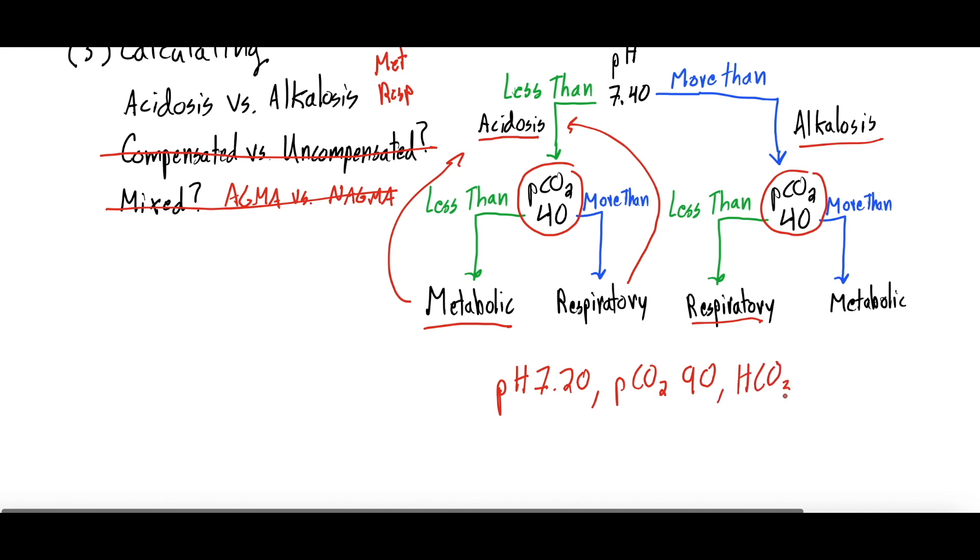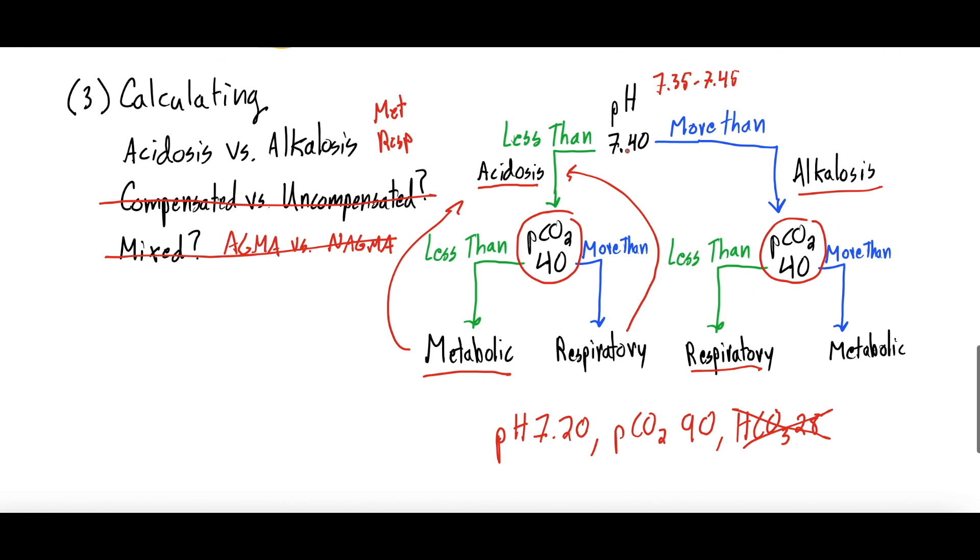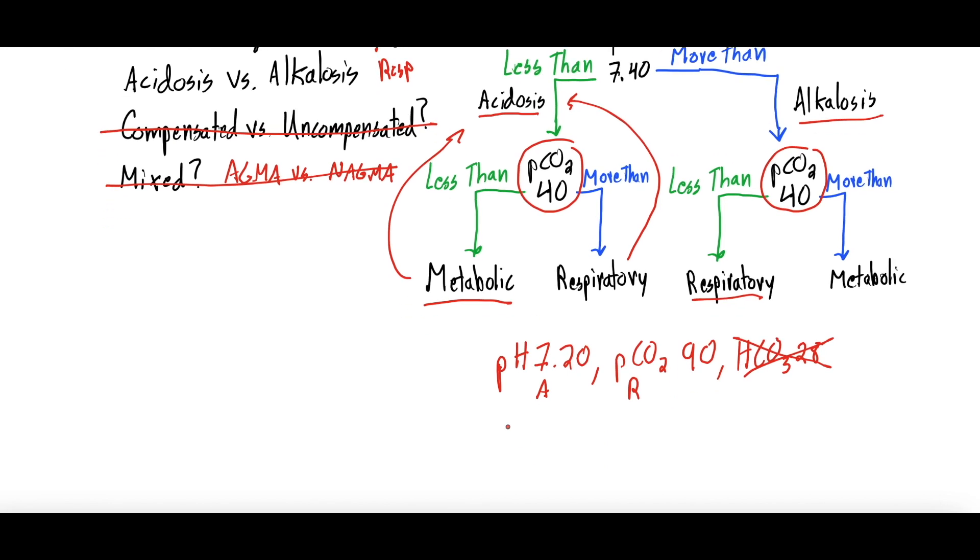So just some examples. Let's say our pH is 7.20, our PCO2 is 90, and our bicarb - again for the sake of this we'll just say it's 28. We aren't even looking at bicarb right now, but what we look at would be your pH. So 7.40 - 7.20, it's less than, so it's an acidosis. So A for acidosis. Then we look at our PCO2 - it's less than 40 or more than 40? It's more than 40, so it is a respiratory acidosis. This would be like a COPD exacerbation.